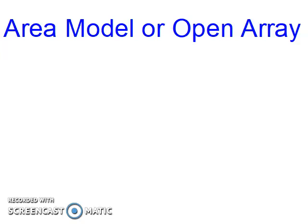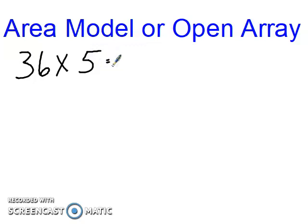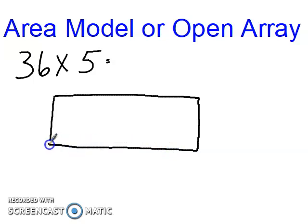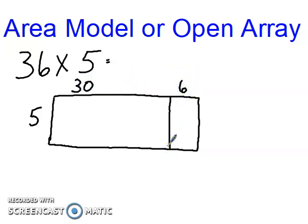Today we're going to be working on the area model, or open array — you'll hear it called both names. I'm going to do three examples starting with 36 times 5. We want to draw an array that matches this problem, so we have 5 and we have 36. Since 36 is quite a bit bigger than 5, I'm going to make it longer. I'll decompose 36 into 30 and 6, because 30 plus 6 equals 36.